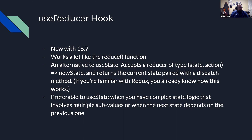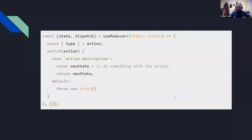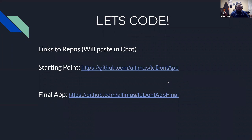Here's an example of a reducer. You declare useReducer and pass in a reducer function, which is basically a switch that takes an action, checks the type, and says if it matches this case, do this and return the new state. You get state and dispatch back from useReducer. It's a simple iteration but it illustrates the pattern well. Now let's look at some actual code and examples — I'll paste the repos into the chat.